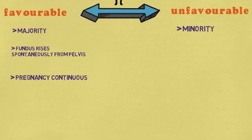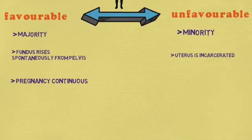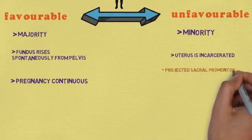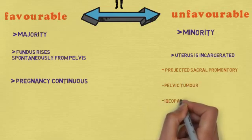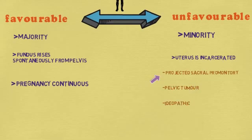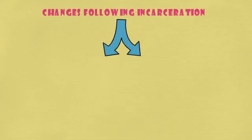Next we discuss the unfavorable outcome. It is very rare — a minority of cases — but here the uterus becomes incarcerated in the pelvic cavity, meaning the uterus is trapped inside the pelvic cavity, leading to complications in pregnancy. The reasons for this incarceration are a projected sacral promontory, pelvic tumor, or idiopathic (unknown reason). The projected sacral promontory is the first sacral vertebra's top being projected forward, preventing the uterus from rising out of the pelvic cavity.